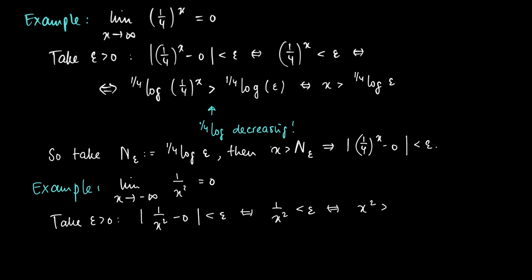But this is equivalent with stating that x² should be larger than 1/epsilon. So if x is supposed to be smaller than 0, then we must have that x should be smaller than minus the square root of 1/epsilon.